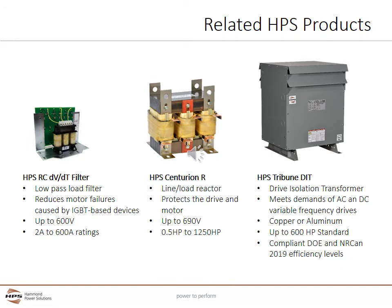Hammond Power Solutions has several complementary products for power quality problems associated with variable frequency drives. The HPS RC DVDT filter is designed to reduce motor failures caused by reflective waves from the pulse-width-modulated output of VFDs with long lead lengths of up to 1000 feet between the motor and the drive. The HPS Centurion R Reactor mitigates current harmonics and protects the VFD from voltage spikes, and can also be used on the load side of the VFD with lead lengths up to 500 feet. The HPS Tribune drive isolation transformer is designed for both AC and DC variable speed drives and can provide any required voltage change. HPS offers two lines: the Tribune E, a high-efficiency design compliant with Canadian NRCan 2019 efficiency requirements, and the Base Tribune, which meets U.S. DOE energy efficiency exemptions.